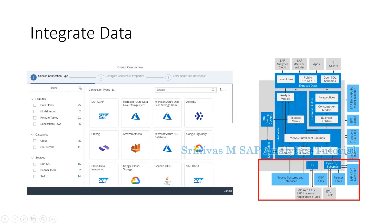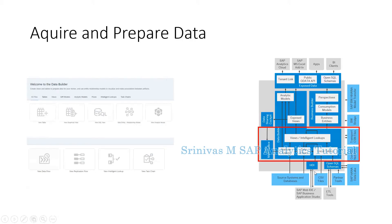Even from SAP HANA Data Lake we can bring data into DataSphere. The second section of the architecture is 'Acquire and Prepare Data.' Once a connection is established, we bring data from source systems. Data is stored in the form of tables — physical tables or remote tables — under views or intelligent lookups, all within the Data Builder. DataSphere has two main sections: Data Builder and Business Builder.